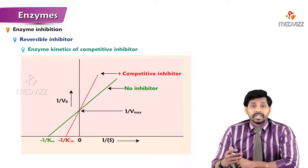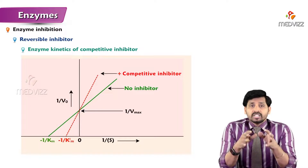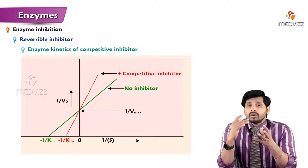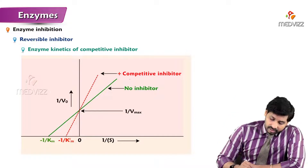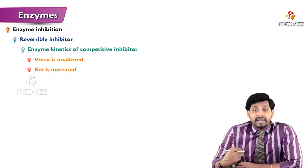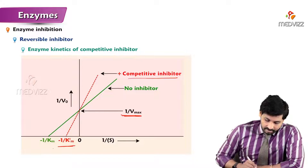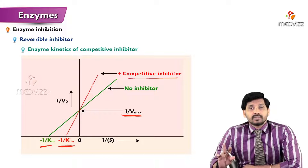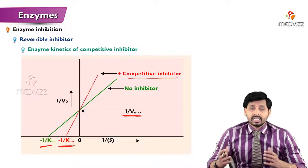Looking at the kinetics of competitive inhibition using the Lineweaver-Burk (double reciprocal) plot — which we discussed in previous videos — in the presence of a competitive inhibitor, the Km value is increased while Vmax is unaltered. The Vmax remains the same but Km has been increased. So in competitive inhibition, the competitive inhibitor increases the Km value with no change in Vmax. This is a key exam point: competitive inhibitors change Km but not Vmax.